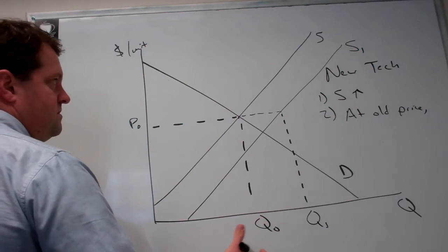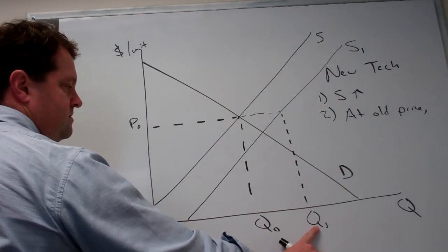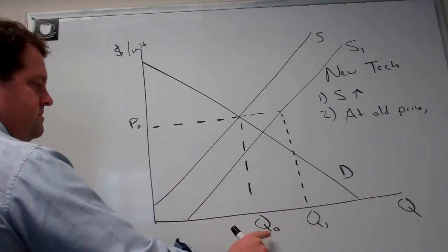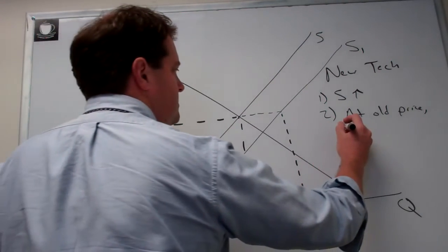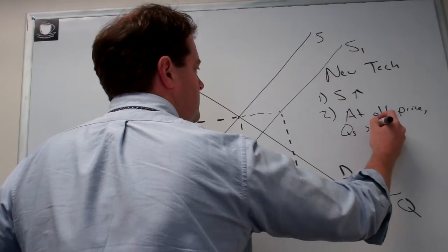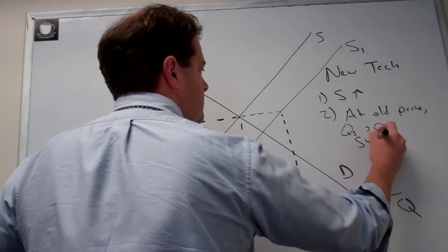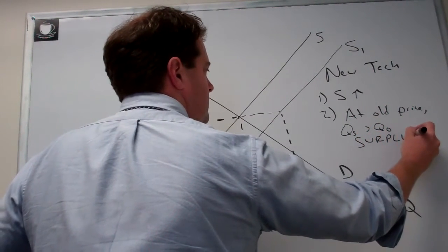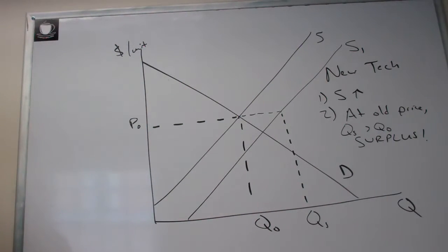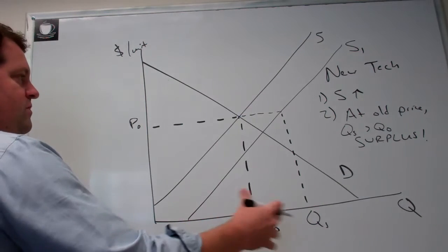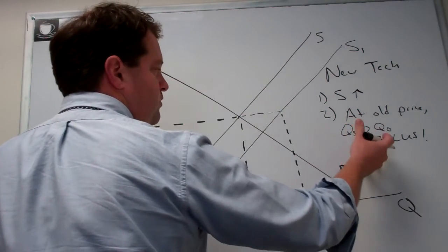So now clearly we've got a surplus of these goods roaming around. The quantity supplied at the old price is greater than the quantity demanded, and that's clearly a surplus. So finally we've identified the surplus.